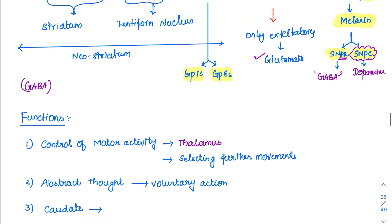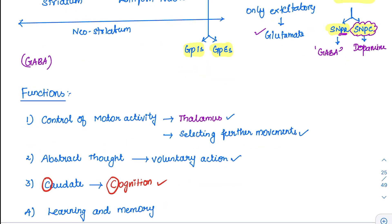The most important function of basal ganglia is controlling motor activity along with the thalamus. They also help in selecting further movements — both cerebellum and basal ganglia help in this. Whenever an abstract thought arises, the basal ganglia converts it into a voluntary action. Recently, a specific function of the caudate nucleus has been identified: it is involved in cognition — 'C for C,' caudate is for cognition. Basal ganglia is also involved in learning and memory processes.